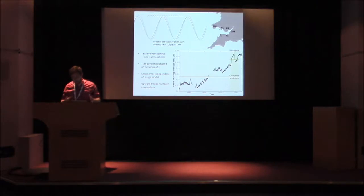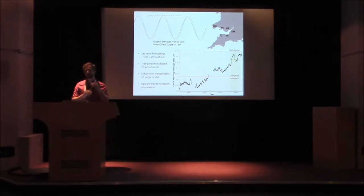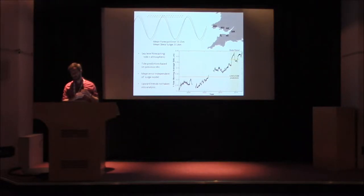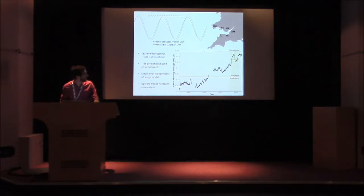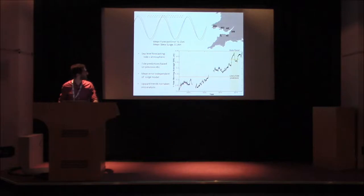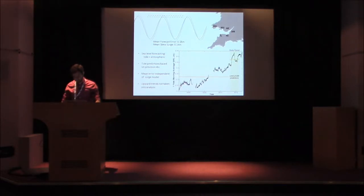To start off with, I've defined an error to be the difference between the forecasted high water and the observed high water, ignoring any timing differences. When you do this for a certain time period — 2013 to 2015 — I got a 15 centimetre mean error.